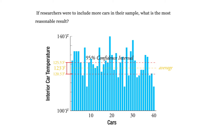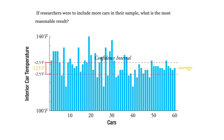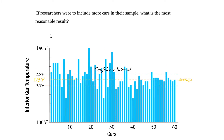It's saying pretty much the same thing we said last time. Now our question is: if researchers were to include more cars in their sample, what is the most reasonable result? The correct answer is this one — the margin of error would decrease.